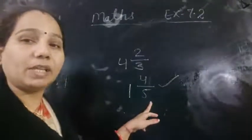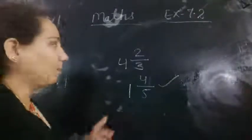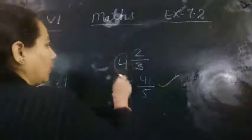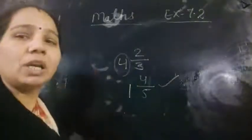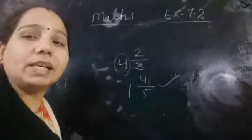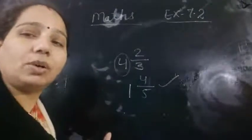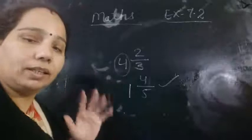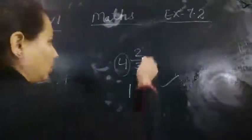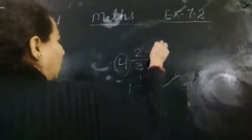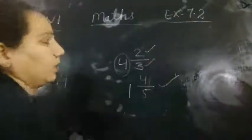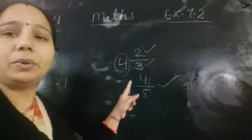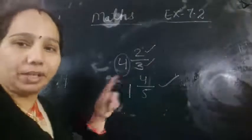What is mixed fraction? It means one whole number. Whole number means starting from 0, 1, 2, 3, and so on. And the numerator will be less than the denominator. This is called a mixed fraction.